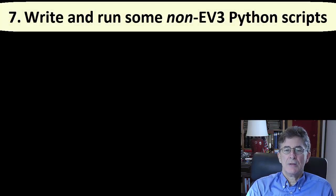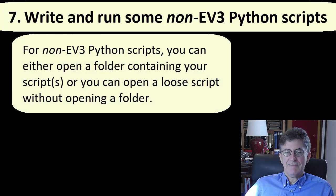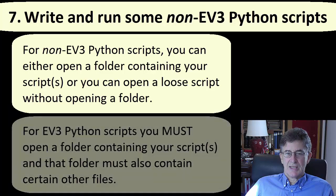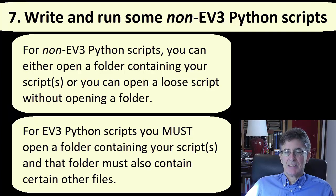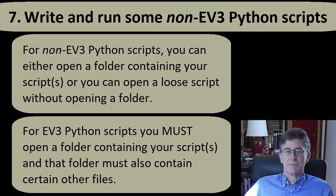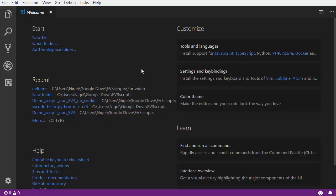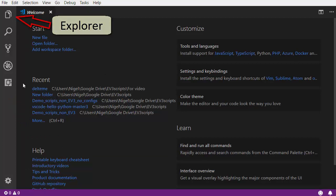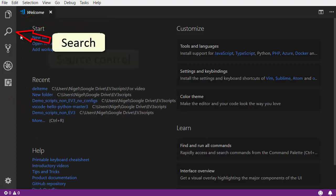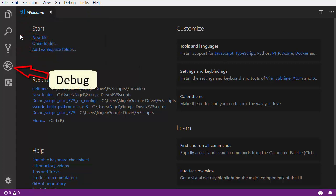Write and run some non-EV3 Python scripts — these will run locally within VS Code. For non-EV3 Python scripts, you can either open a folder containing your script or simply open a loose Python script. However, since working with EV3 Python scripts requires that you open a folder containing your script or scripts, it would be a good idea to have that habit even when you are working with non-EV3 scripts. Start VS Code. You should recognize the various parts because you should have watched the sister video before starting this one.